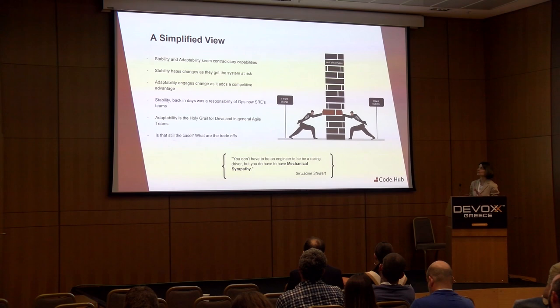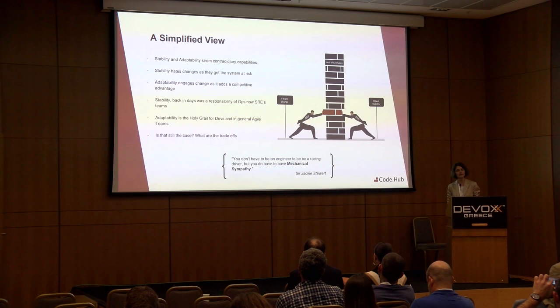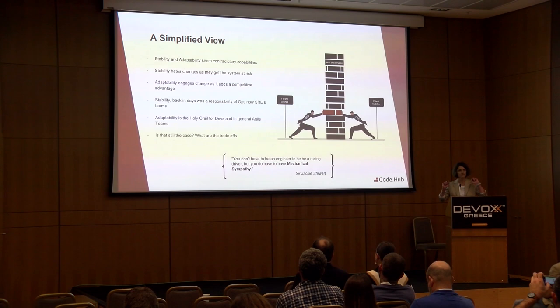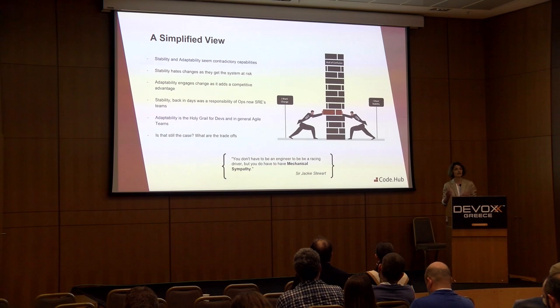Someone might say that stability and adaptability seem contradictory capabilities, because stability hates changes as they put the system at risk, while adaptability engages change to earn a competitive advantage, especially for time-sensitive markets. Stability, back in the day, was the responsibility of ops — now SRE teams. Adaptability was the holy grail for development and agile teams. Is that still the case? Today we have the DevOps team, which fills the gap between developers and operations.